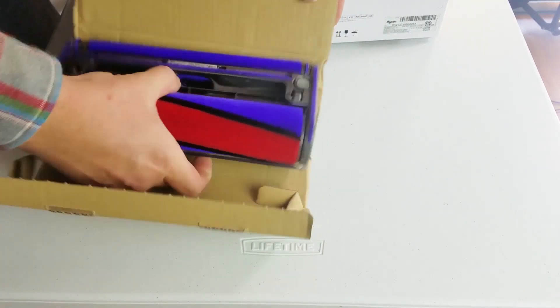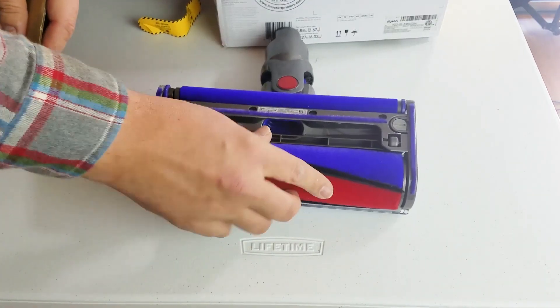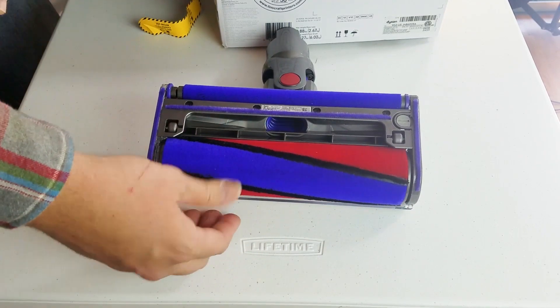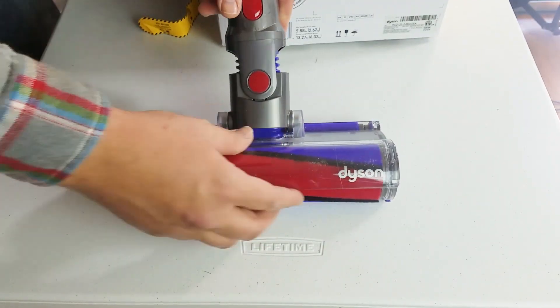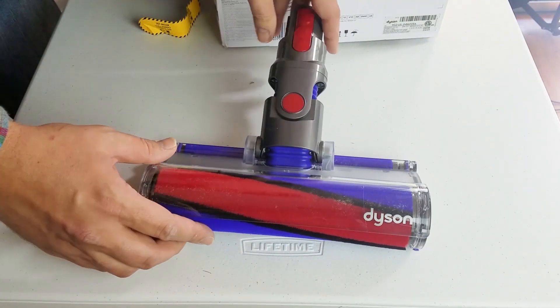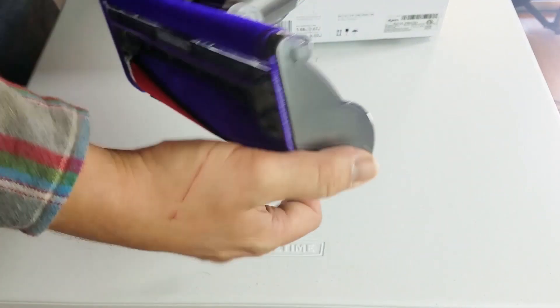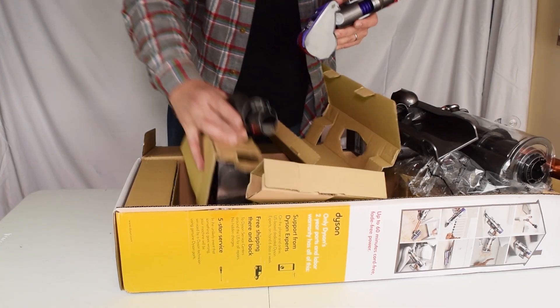Looks to be the soft brush roller. My understanding is that this hasn't changed all that much. Although the other one we're going to look at has. So this is only available on the Absolute. The soft brush.